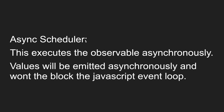The second one is the async scheduler. As the name itself says, it will execute the observable asynchronously. Asynchronously means values will be emitted asynchronously and it will not block the JavaScript event loop. The previous queue scheduler will block the event loop, but the async scheduler will not. The values will be emitted asynchronously and saved in the task queue.